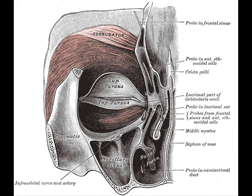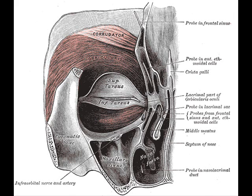From this origin, the fibers are directed lateralward, forming a broad and thin layer, which occupies the eyelids, surrounds the circumference of the orbit, and spreads over the temple, and downward on the cheek.